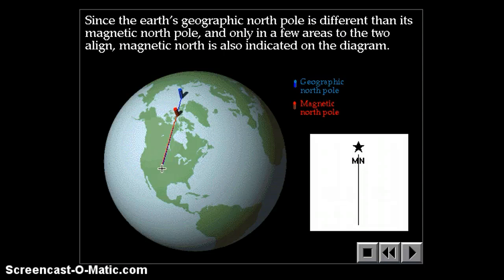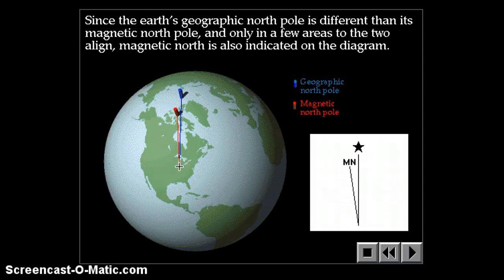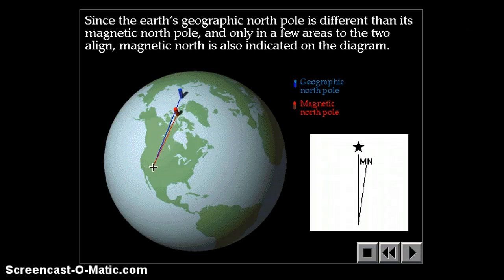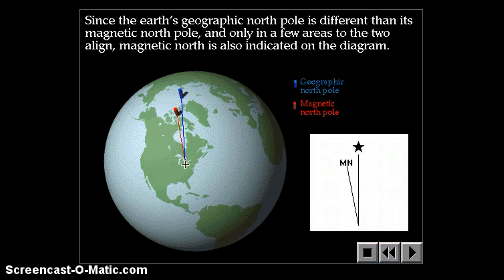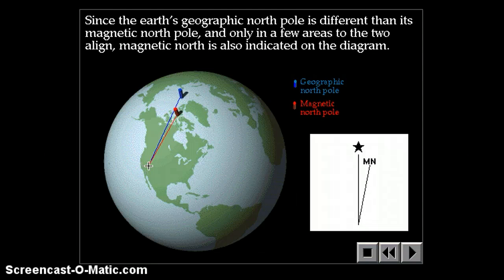Since the Earth's geographic north pole is different than its magnetic pole, there are only a few areas where the two things align. The magnetic north is always indicated on the topographic map. The magnetic north could be to the left of the geographic north, it could be to the right, it could be either way.